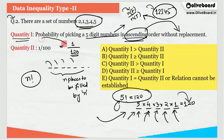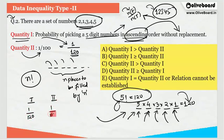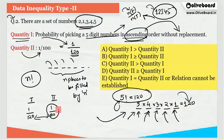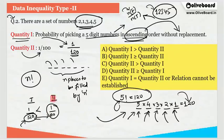Quantity 1 is 1/120 and quantity 2 is already provided as 1/100. Since the numerators are equal, I compare using the denominators. If the denominator is smaller, the fraction is larger. So 1/100 is larger than 1/120 because 100 is smaller than 120. Therefore quantity 2 is greater than quantity 1, and the answer is option C.